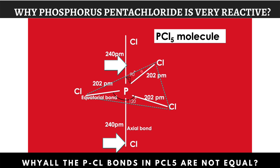We know that electrons repel each other, whether it is lone pair or bond pair. Here, we have bond pair–bond pair repulsion. So, to reduce and minimize this bond pair repulsion, these axial bonds are longer in the PCl5 molecule.